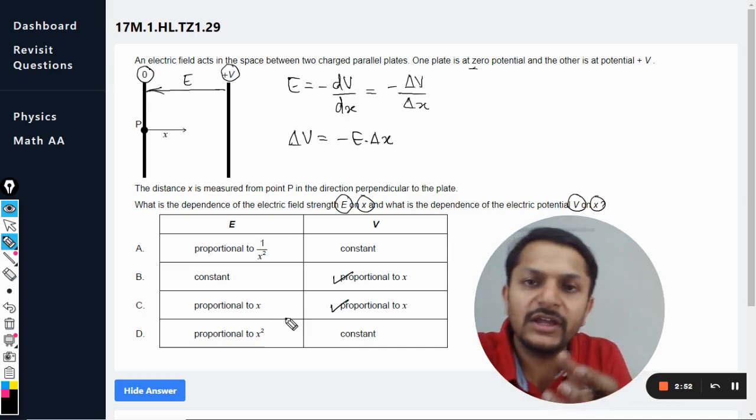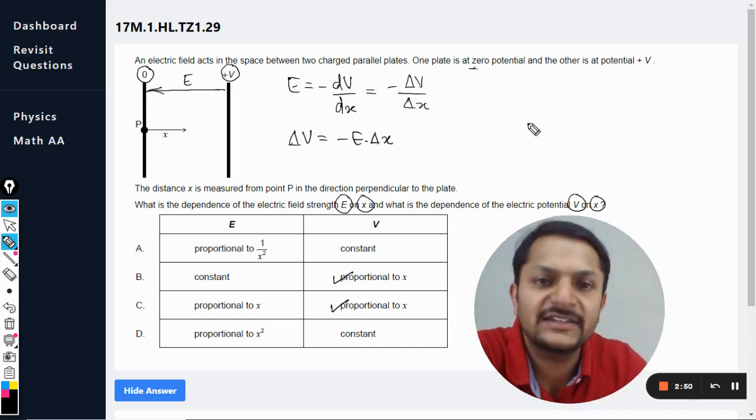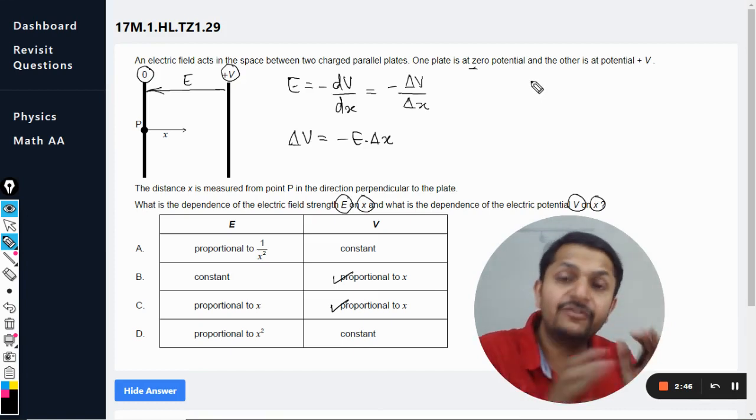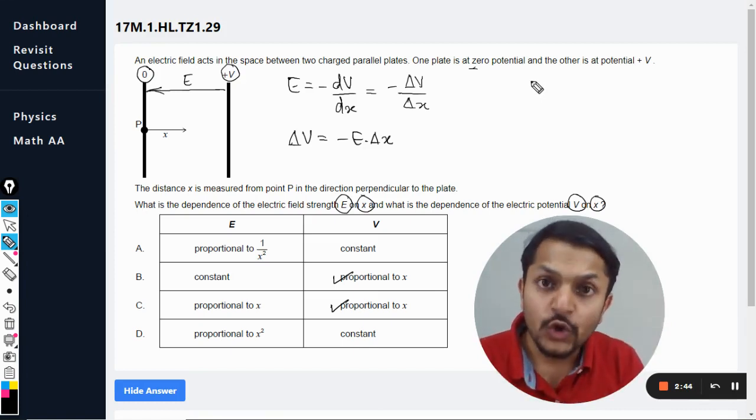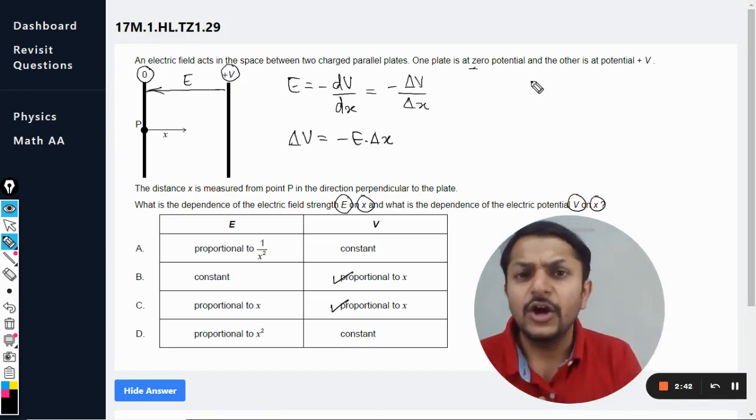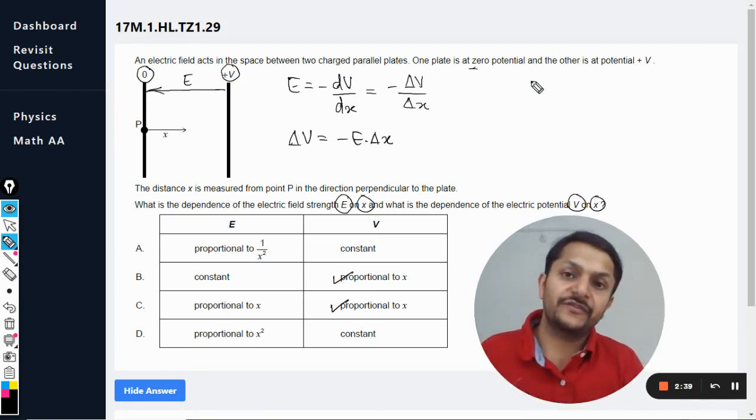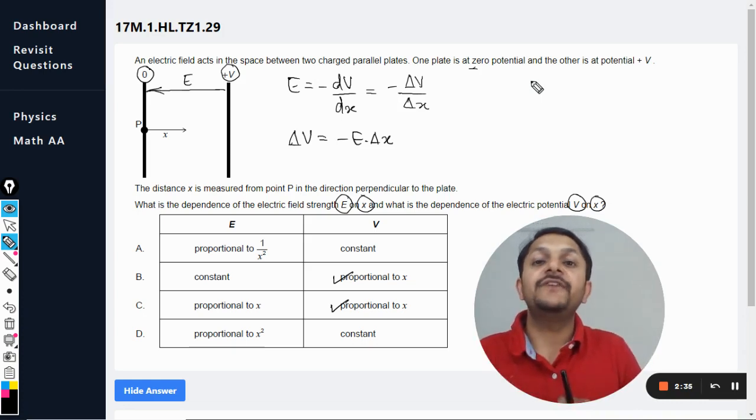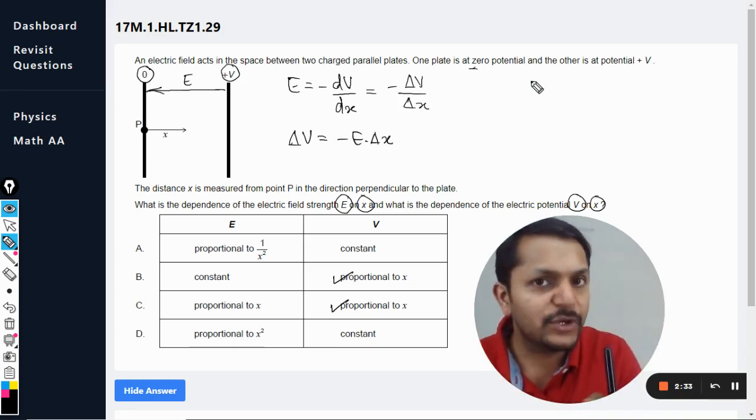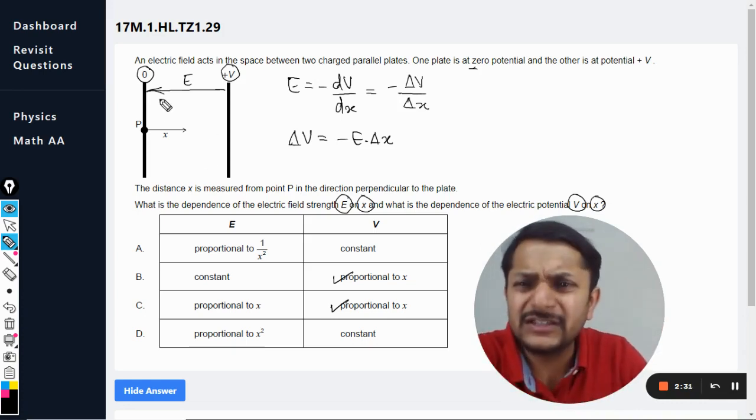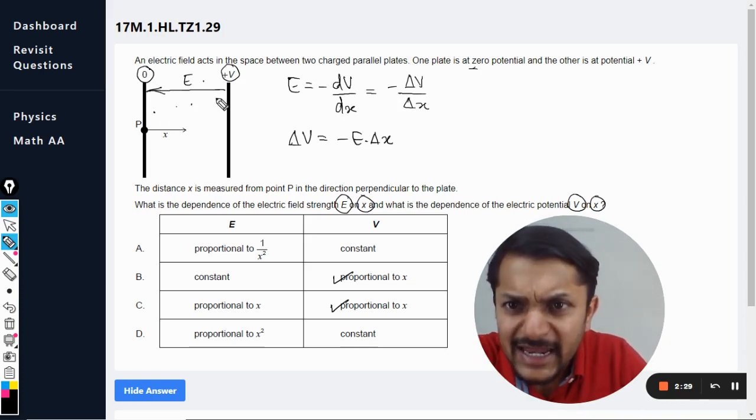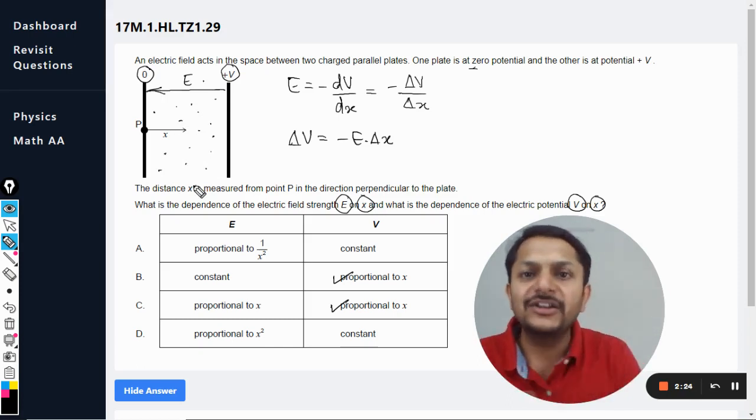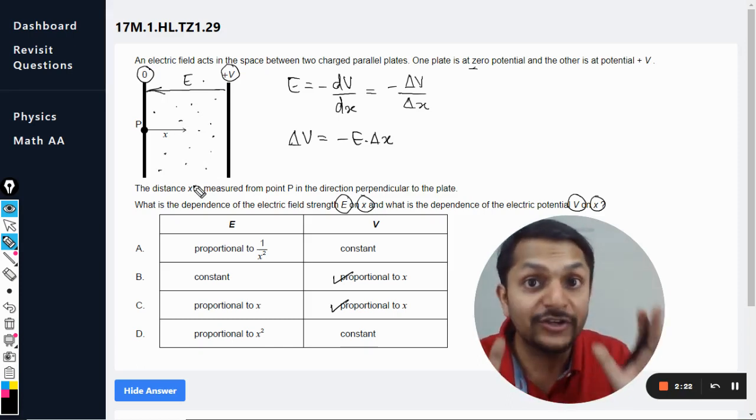Another explanation: in the case of electric field strength, inside the electric field, whenever we have these two parallel plates, I tell you it is the best method of producing a uniform electric field. Uniform means that the electric field value is not dependent on the position. So wherever the point is, anywhere within the space, the direction of the electric field as well as the magnitude of the electric field is not going to change.